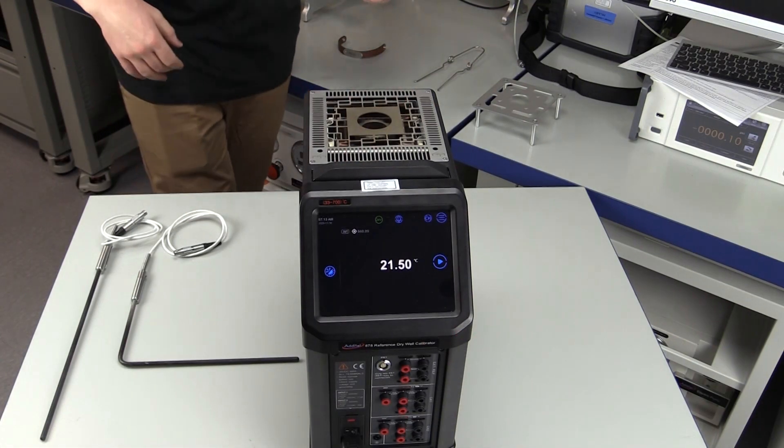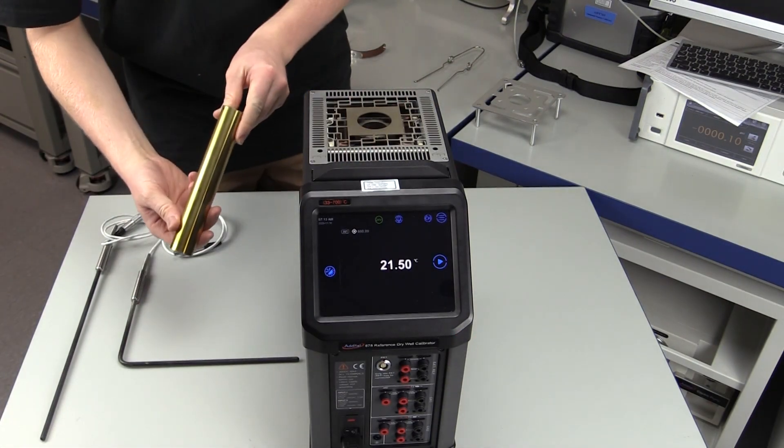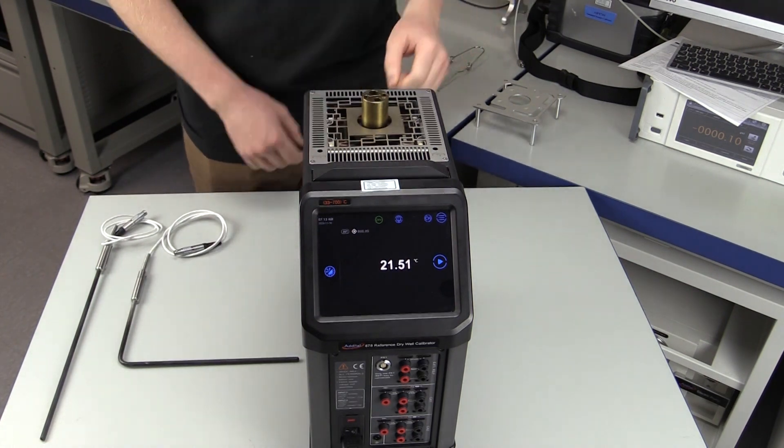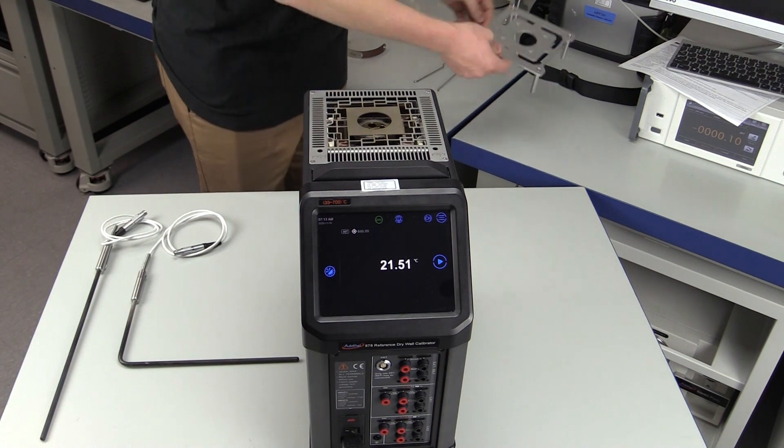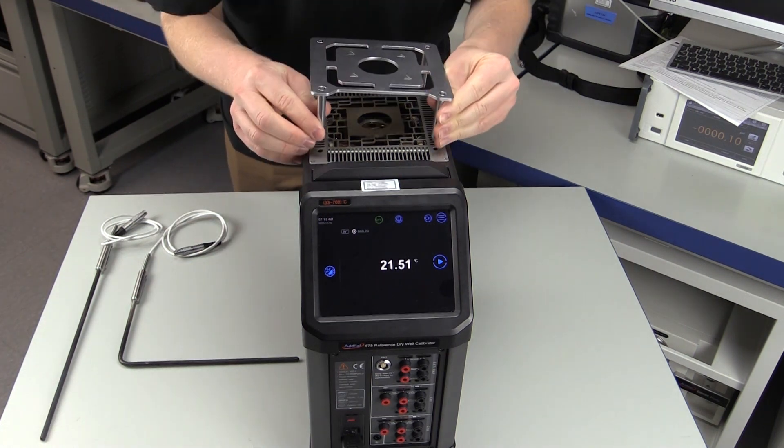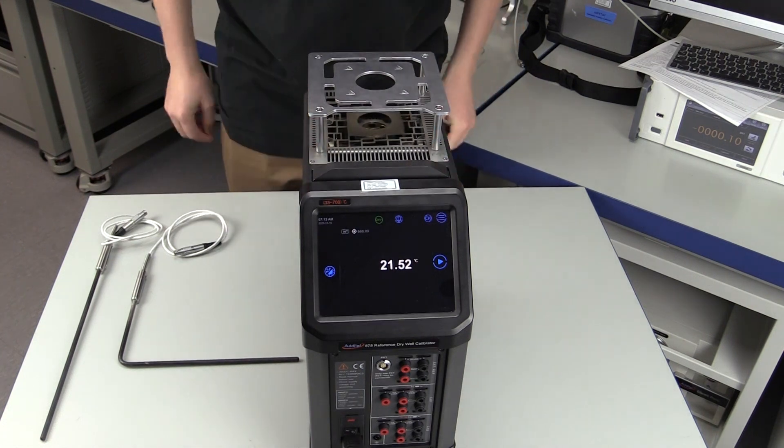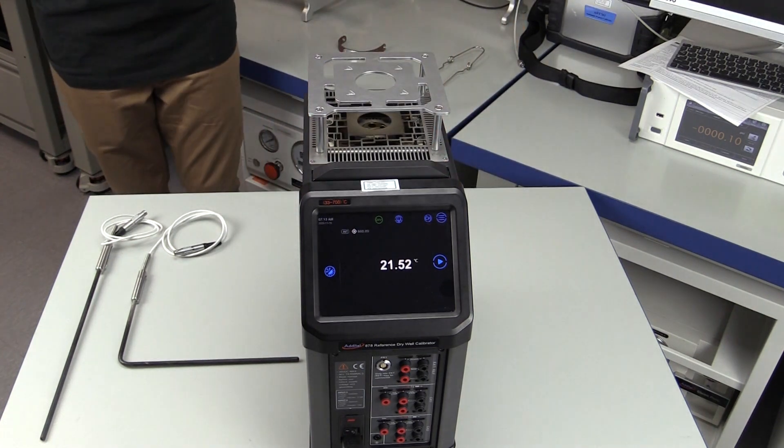We start by carefully inserting the appropriately sized insert into the 878-700 calibrator. Most all of the available Additel inserts have standard hole sizes to accommodate typical PRT dimensions. However, other insert styles are available if needed. Place the accompanying heat shield on the top of the calibrator.